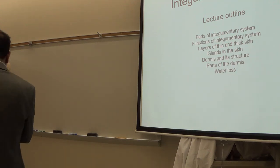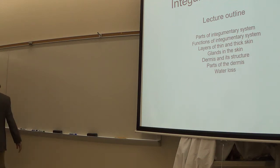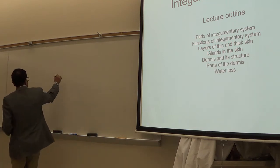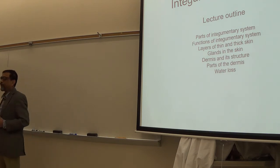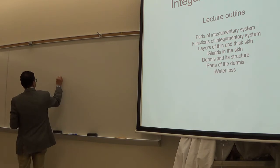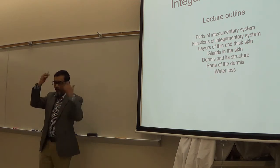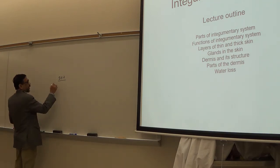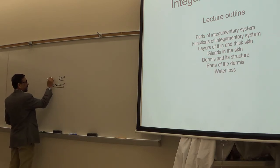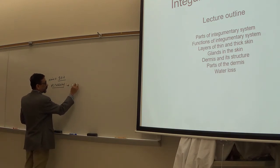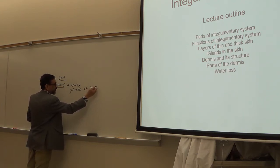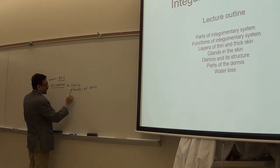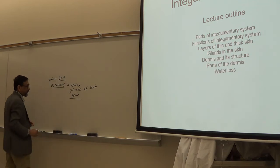Let's talk about the integumentary system. The integumentary system covers the whole body and protects the body from the outside. The main organ of the integumentary system is your skin, which covers the whole body and protects the internal structures from outside. Accessory structures are nails, glands of the skin — remember, not other glands, glands of the skin — sweat glands, sebaceous glands, and hair.